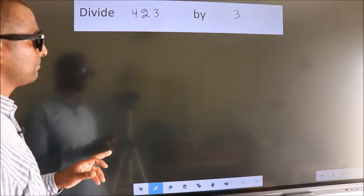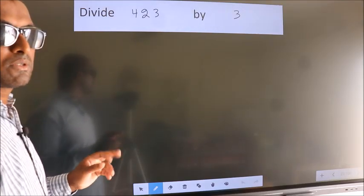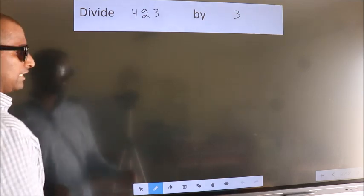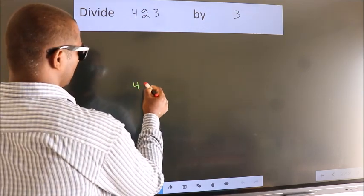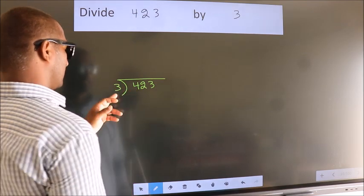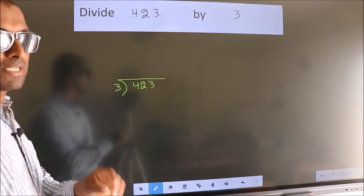Divide 423 by 3. To do this division, we should frame it in this way: 423 here, 3 here. This is your step 1.